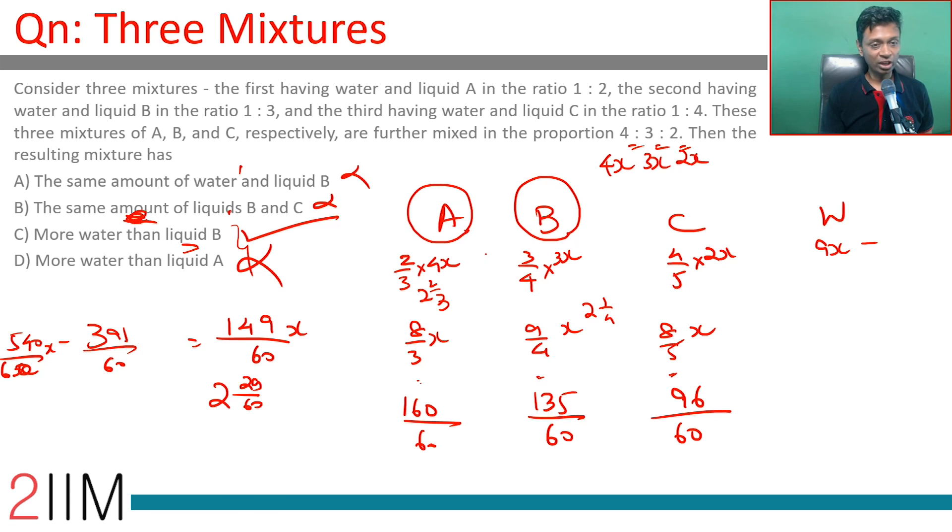A and B are not true. Clearly, same amount of water and liquid B - not true. Same amounts of B and C - not true. More water than liquid B - that is true. Less than liquid A - so this is not true.